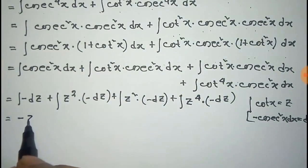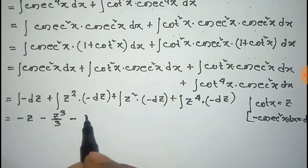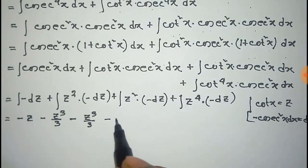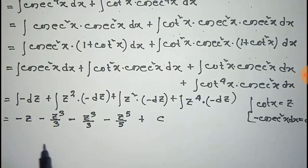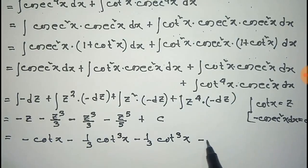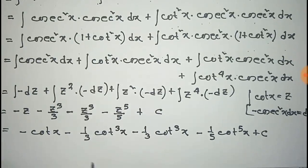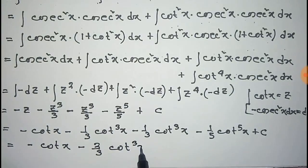Integrating, this equals minus z, minus z cube by 3, minus z cube by 3, and minus z to the power 5 by 5, plus a constant c. Putting back z equal to cot x, this becomes minus cot x minus two-thirds cot cube x minus one-fifth cot to the power 5 x plus constant c. Thus we can integrate cosec to the power 6x in this process.